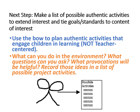The next step is you make a list of these possible activities to extend the interest and tie goals and standards to the content of interest. You use the bow to plan authentic activities that engage children, so we stay away from teacher-centered teaching. What can you do to the environment? What questions will you ask? What provocations will be helpful? You can record these ideas in a list of possible project activities, and that list will later become a part of our curriculum grid. The curriculum grid is like a curriculum map that you will often see in school districts, and we move from this creative infographic type of planning to the linear planning form.